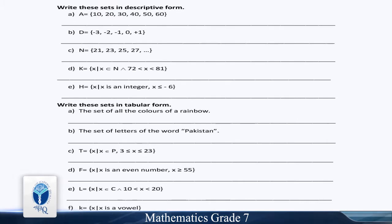Write these sets in descriptive form. A: 10, 20, 30, 40, 50, 60. B: D = minus 3, minus 2, minus 1, 0, and plus 1.